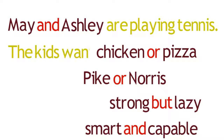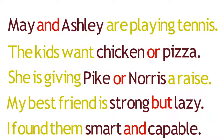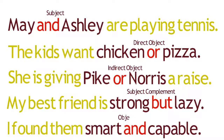Phrases created in this way can be used in a sentence in any of the ways you're already familiar with: as the subject, the direct object, the indirect object, the subject complement, or the object complement. For the remainder of this module, we will use conjunctions solely in this way to make pairs of nouns or adjectives into phrases.